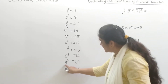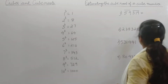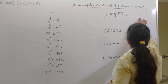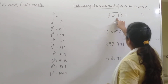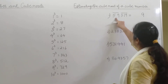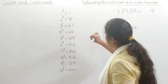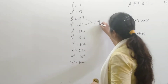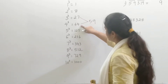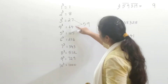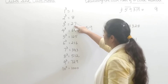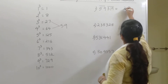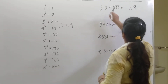The number against 729 is 9, so 9 forms the units digit of the cube root. Now take out the second group 59. It lies between 27 and 64. The smaller of these two numbers is 27, and the number against it is 3. So 3 forms the tens digit of the cube root.